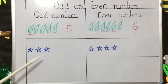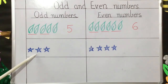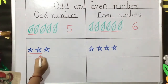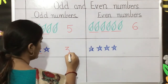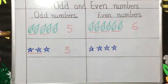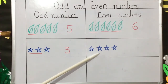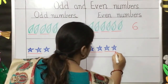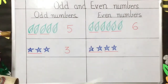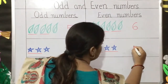Now let us see another example. I have drawn three stars over here. Let us group them in twos. Now let us look at four: one, two. So the number four can be grouped in twos, so it is an even number.